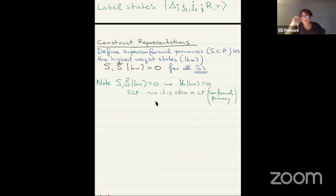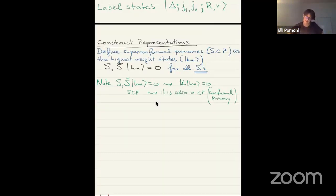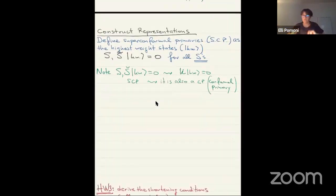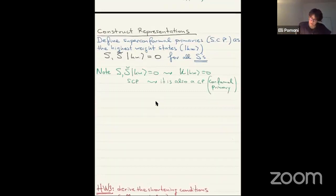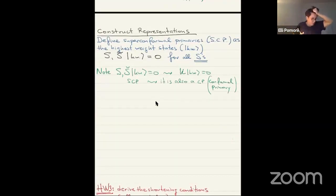I'm assuming that you know what conformal multiplets are. If there is a problem, a little bit of homework can make this fine. Now, in order to make the multiplets, we just act with the Q's.